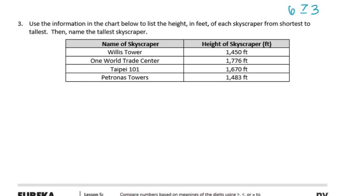Number three: use the information in the chart to list the height in feet of each skyscraper from shortest to tallest, then name the tallest. They all have a 1 in the thousands place, so let's compare the hundreds place. The shortest would have the smallest number. Willis Tower is 1,450 and Petronas Towers is 1,483 — both have 4s in the hundreds, while the others have 7 and 6, which are larger. Comparing Willis Tower's 5 to Petronas Towers' 8 in the tens place, 5 is less than 8, so Willis Tower is the shortest, followed by Petronas Towers.